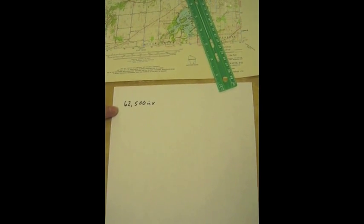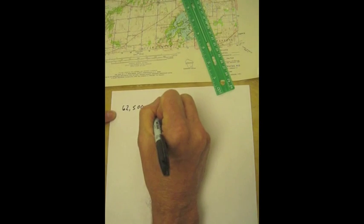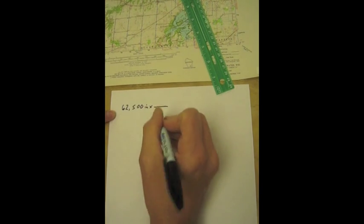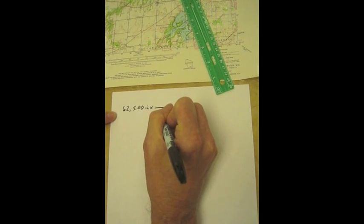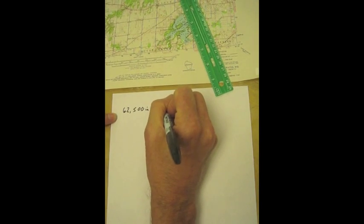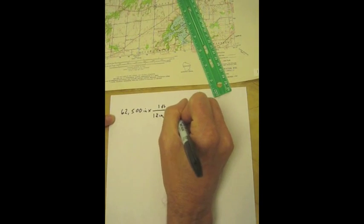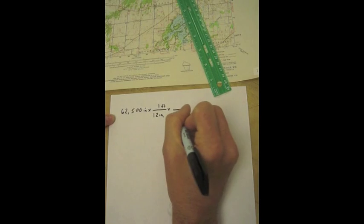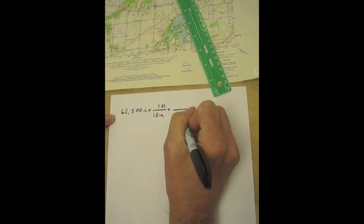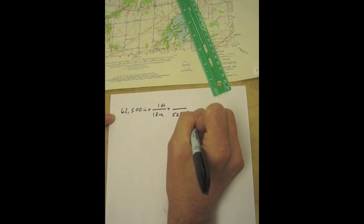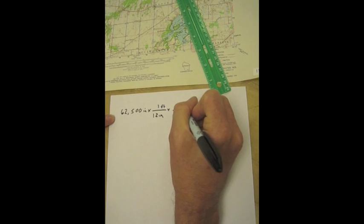So maybe how many miles does that equal? What you have to think about is just doing a simple conversion. I think there's 12 inches in one foot, and then a number that you might not know, there's 5,280 feet in one mile.